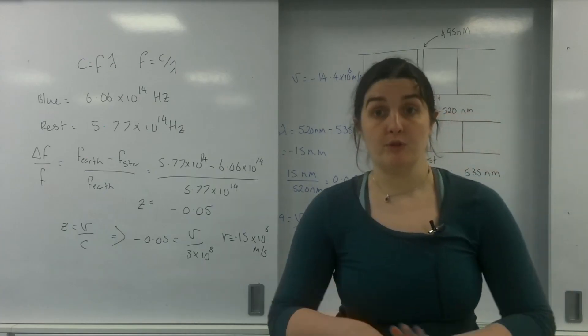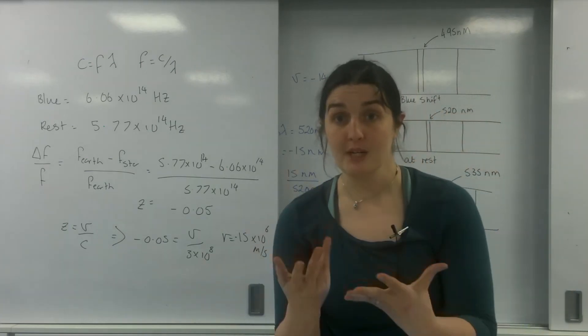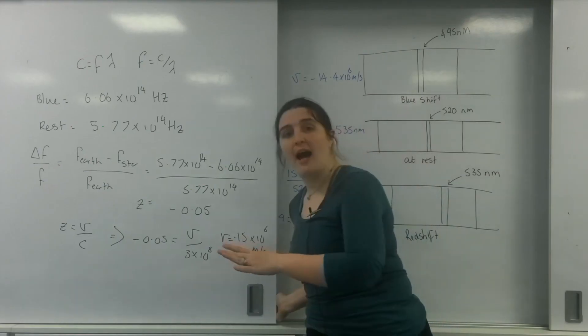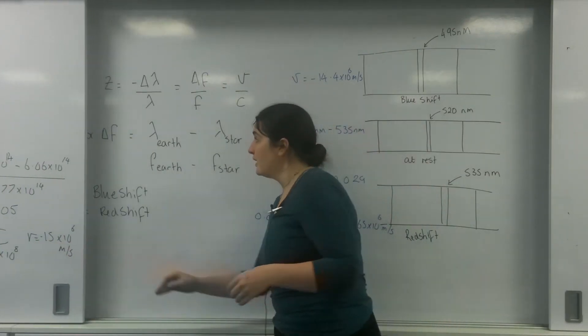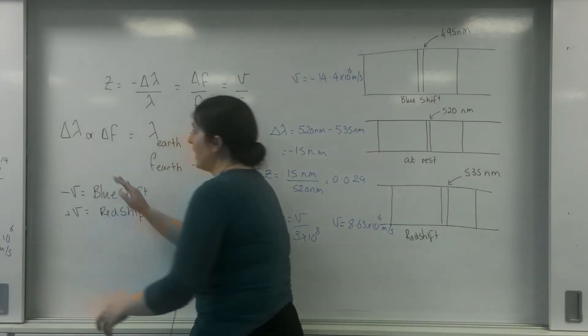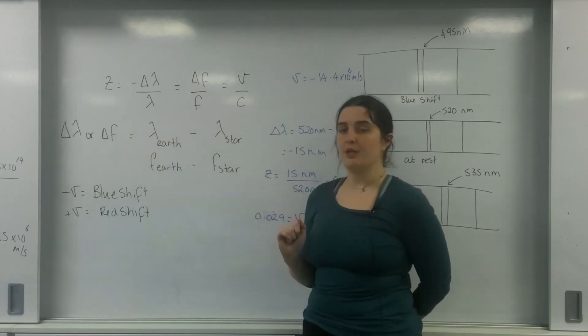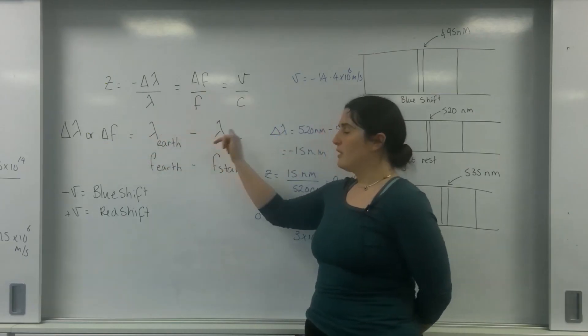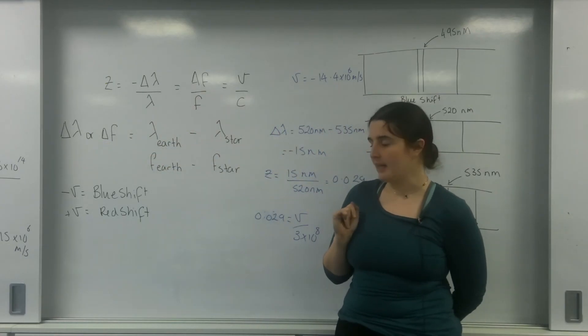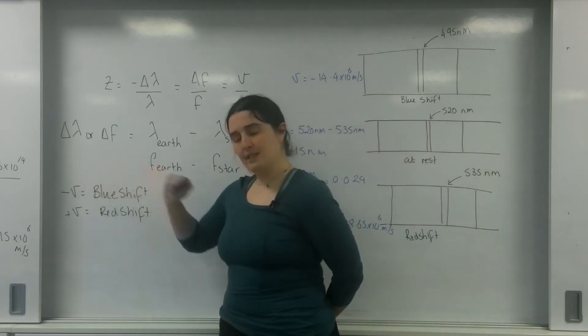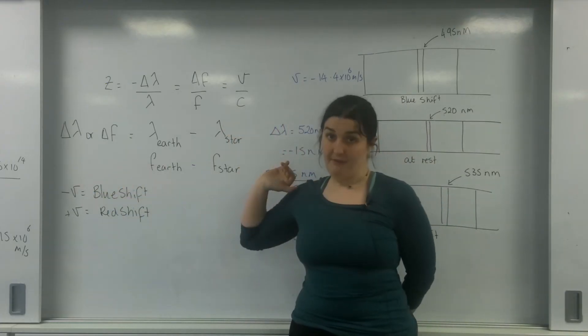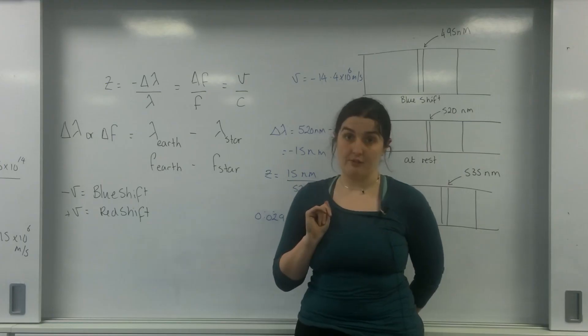So you're more than welcome to convert it into frequency and use this formula if you're not happy with the negatives. Key things to remember is that the change in lambda or the change in frequency is always earth minus what you get from the star. And that if it's a negative velocity, you're blue shifting, and if it's a positive velocity, you are red shifting.